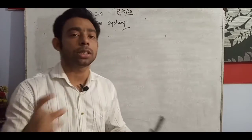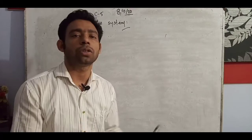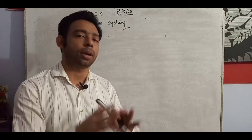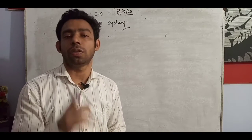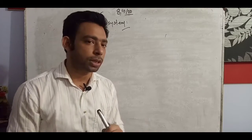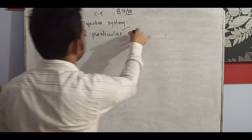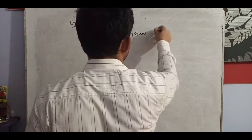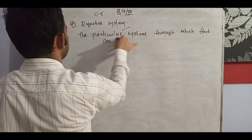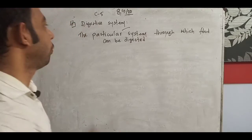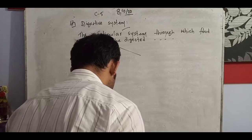You know that if there is no digestive system, if digestion does not occur properly in human beings or any living things, all kinds of physiological activities get hampered and we can even die. Digestion and food digestion are very important for conducting all kinds of physiological activities. The particular system through which food can be digested is called the digestive system.